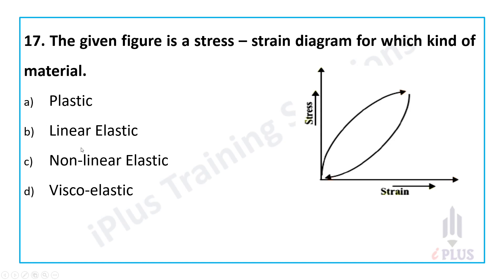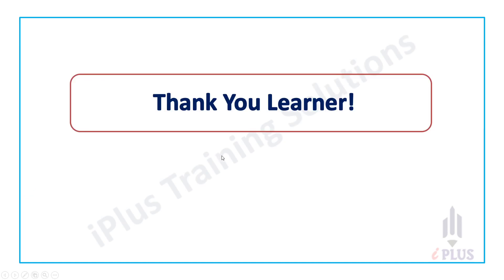The given figure indicates the stress-strain diagram for which kind of material — plastic, linear elastic, nonlinear elastic, or viscoelastic? Upon unloading, the material returns to its original shape without permanent deformation. This is actually a viscoelastic material. That covers the important MCQs based upon material behavior. See you in the next class, thank you.